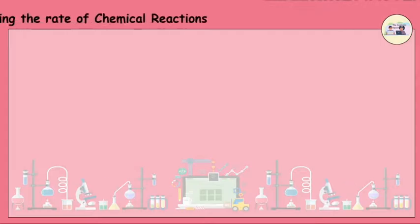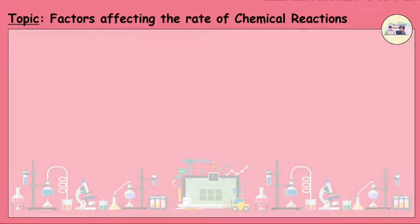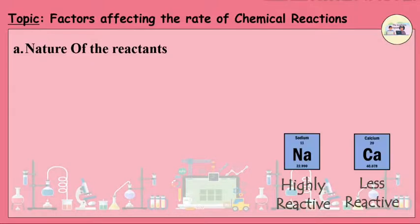Factors Affecting the Rate of Chemical Reactions. First, nature of reactants. The nature of the metal is responsible for the difference in the rate of chemical reaction. Nature or reactivity of reactants influences the rate of chemical reaction.